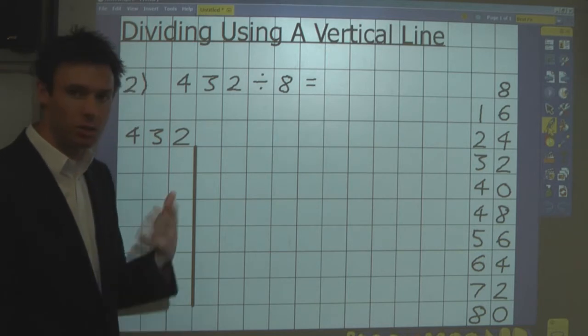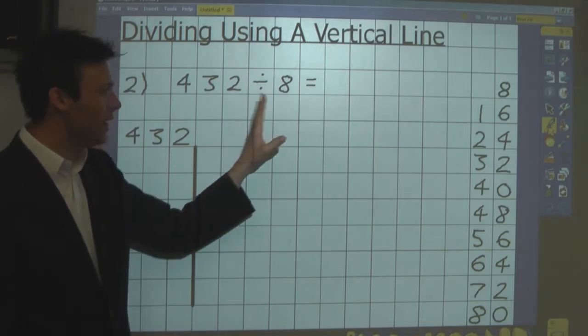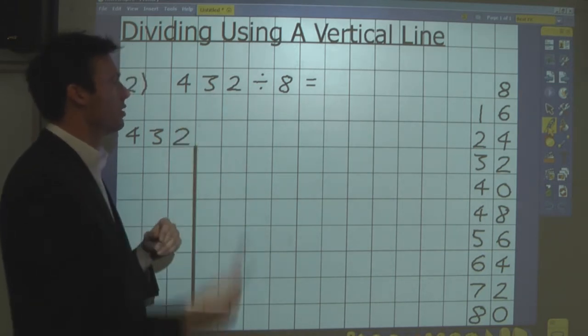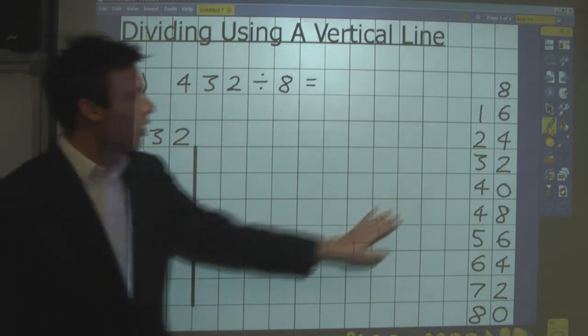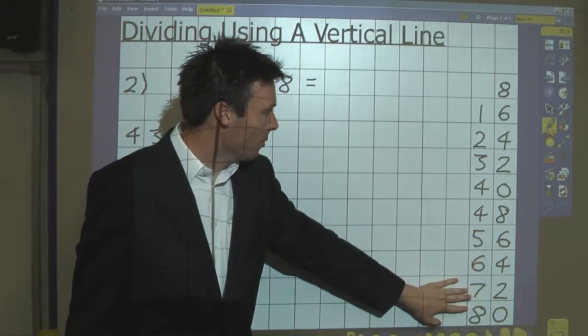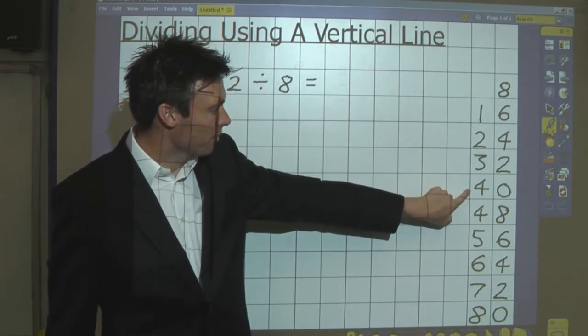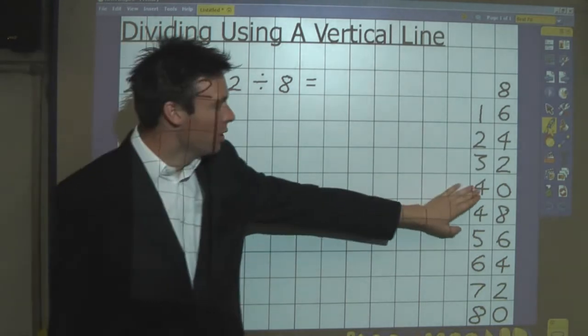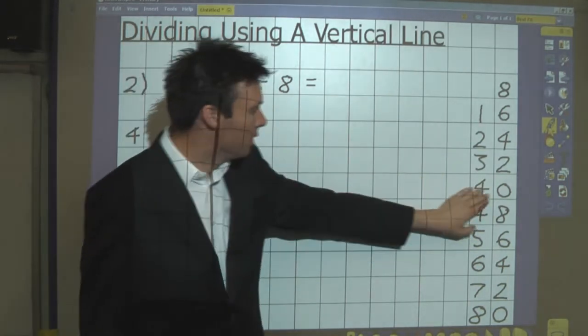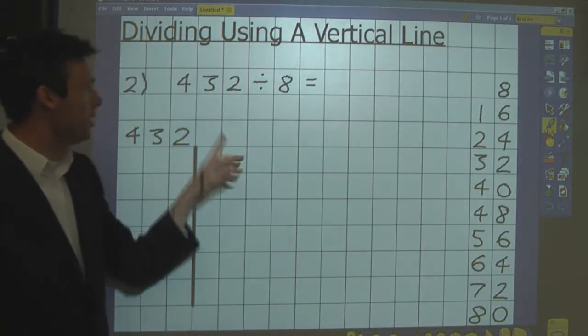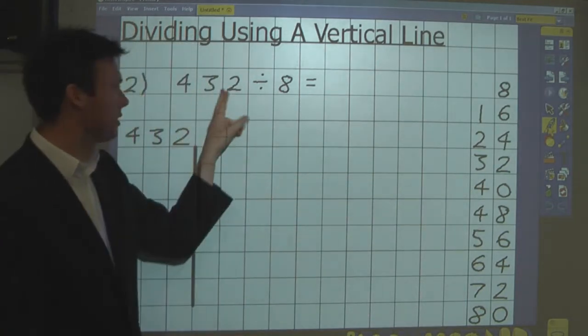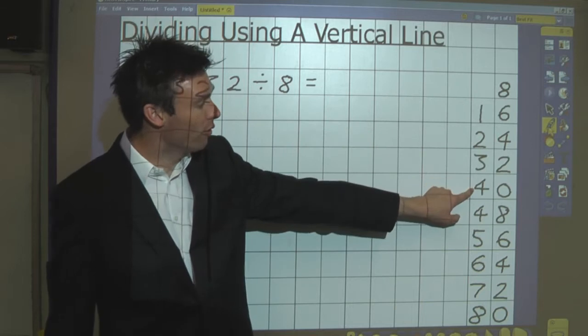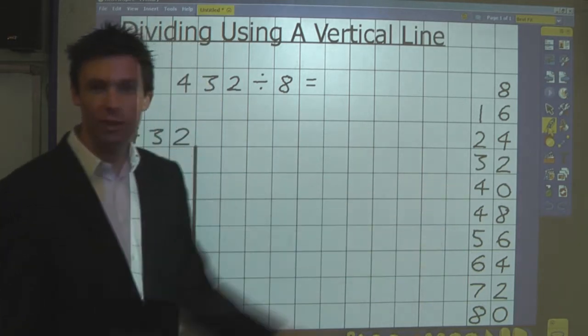And the first thing we need to see is the chunk we should take away first. How many lots of 8 should we take away first based on our times table knowledge? Here's another tip. Just look at the first two digits of this number, 4 and 3. And then look at the numbers in the 8 times table, and you'll see that 40 is less than 43, but 48 is bigger than 43. So we could take away this chunk here, but it's not actually 40, it's 400 because of the place value. So the first amount we're going to take away is 400, which isn't 5 lots of 8, but 50 lots of 8.